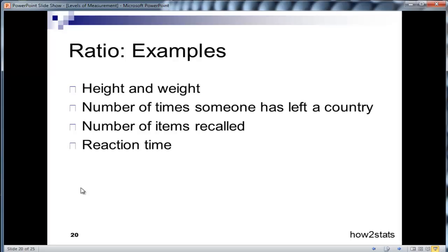Reaction time is a ratio scale. Number of times you stalk someone on Facebook is a ratio scale. Now theoretically you can score zero, but my hunch is that anyone who's under the age of 50 probably would not score zero on that item.